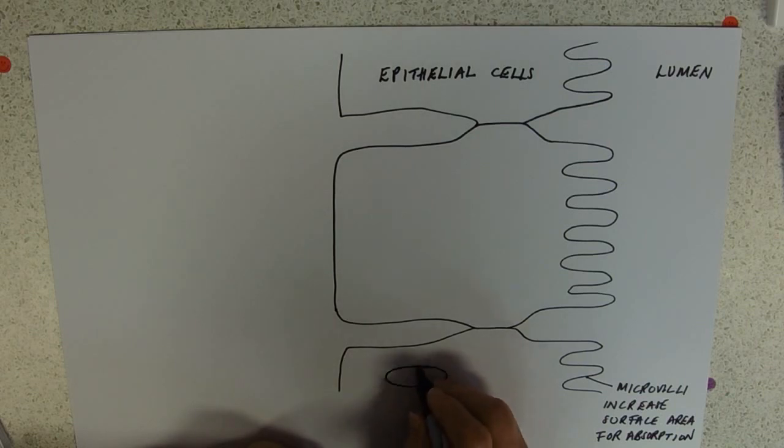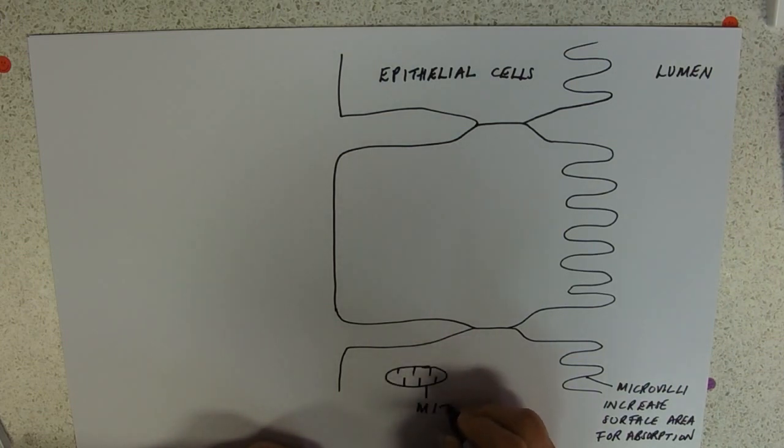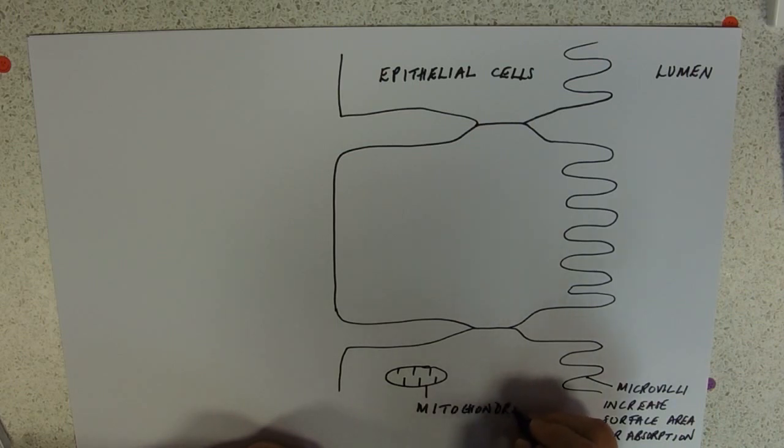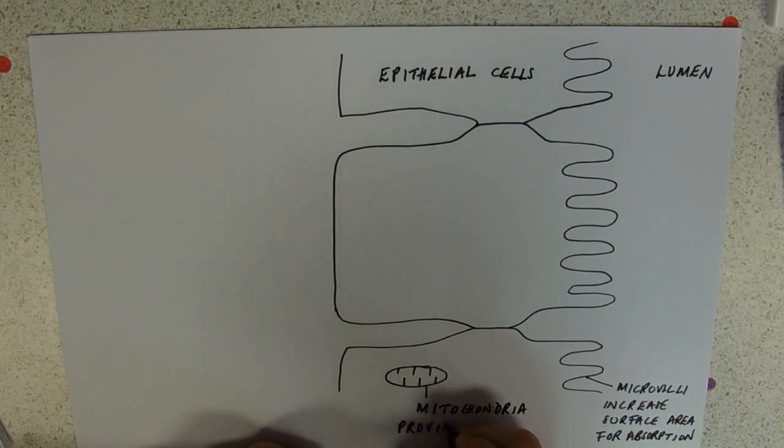And these cells, I've not got room to put them in there, are mitochondria. And their role is to provide ATP for active transport.